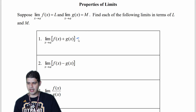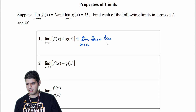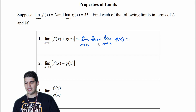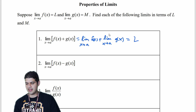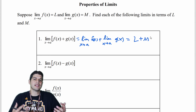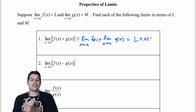Starting with the sum property, we can distribute the limit: the limit as x approaches a of f of x plus the limit as x approaches a of g of x. We know this piece is L and this piece is M, so our final answer is L plus M. Whatever those numbers come out to be, we can add them together.